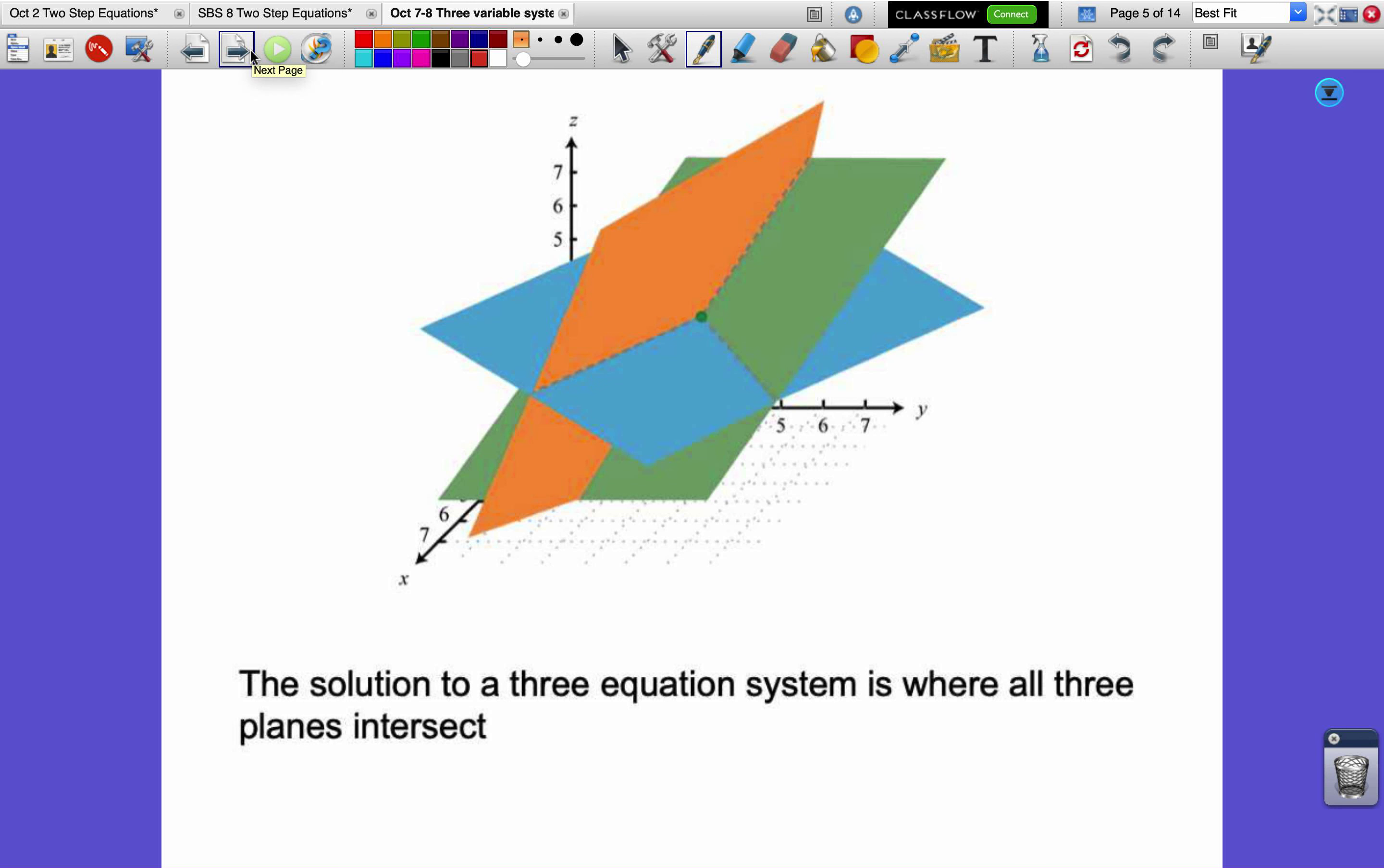All right, now here's the big concept, is that if we have a system of these three variable equations, then each of those equations will have a plane of solutions existing somewhere in this three-dimensional space. When two of those planes intersect, they'll form a line where they intersect, and if we put a third plane in there, it'll cut that line at a single point. So the solution to a three-equation system is where all three planes intersect. There's only one point in here that's a combination of an x, a y, and a z that'll make all the equations true at the same time.